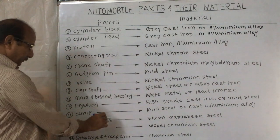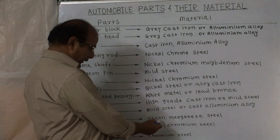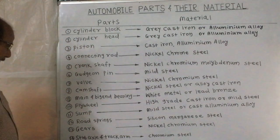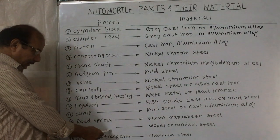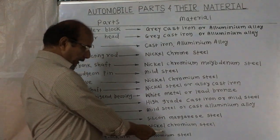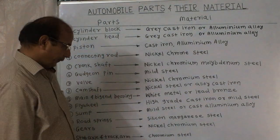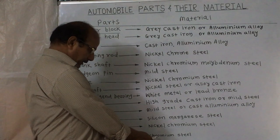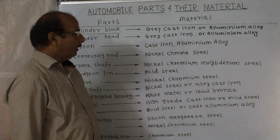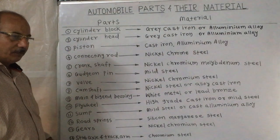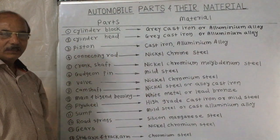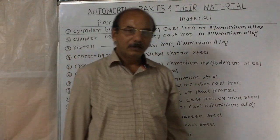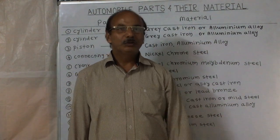Road springs are made from silicon-manganese steel. Then gears — the material of the gear is nickel-chromium steel. And the stub axle and track arm material is chromium steel. All parts and their materials are given here totally, so it is not necessary to search anywhere. That's why I have shown everything on the board.